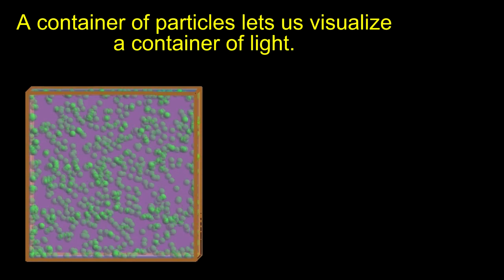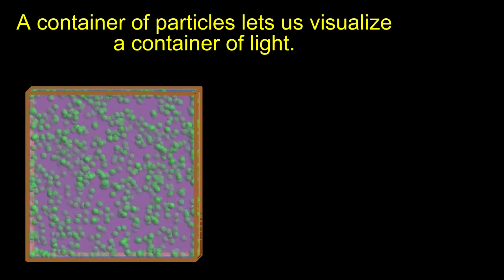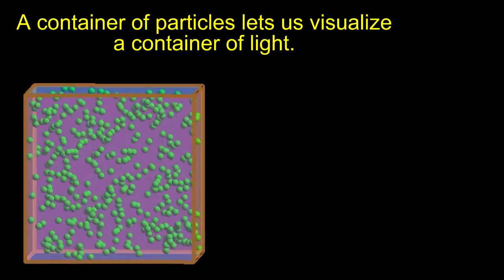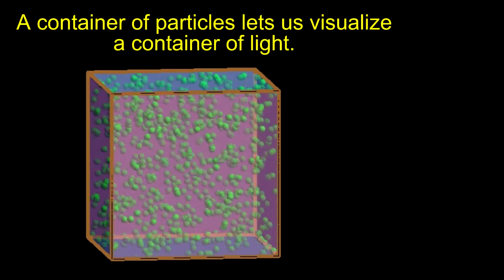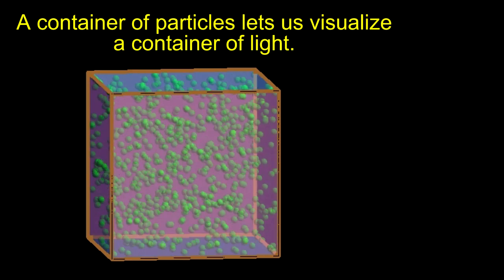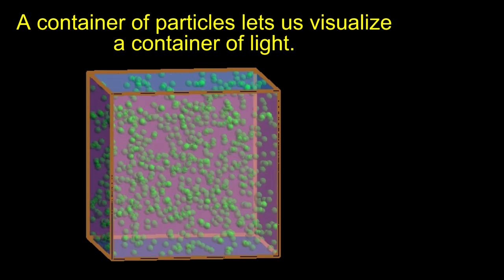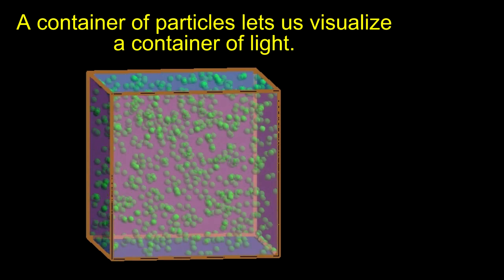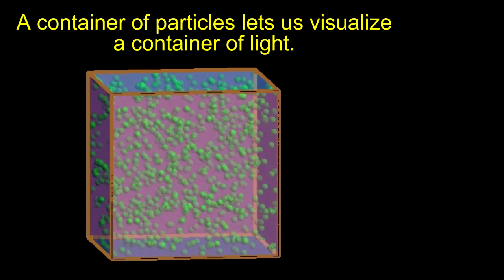Once again, we will use our light as particles model, with the photons bouncing around inside the container. This model lets our human brains visualize what's happening. Just keep in mind that the model also leads to paradoxes and incorrect predictions. A more accurate model uses the energy in the field instead of counting photons. For our situation, both models produce the same mathematical results.